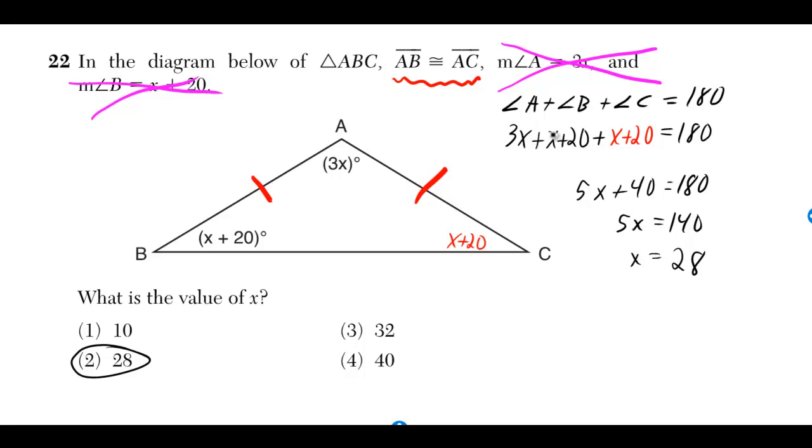So 3x plus x plus 20 plus x plus 20 is equal to 180. So 5x plus 40 is equal to 180, so 5x is equal to 140, so x is equal to 28.